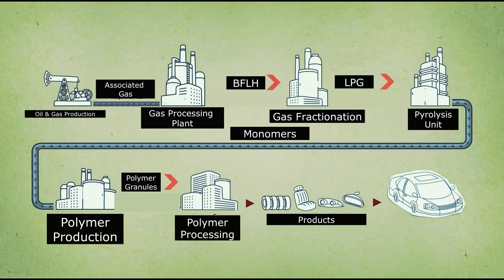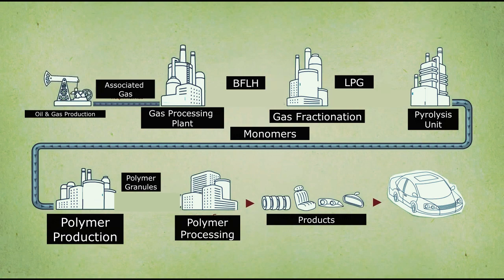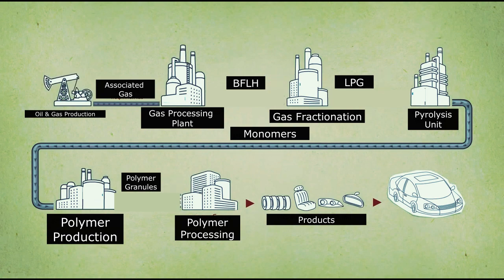A significant part of our material environment — from clothes to car components — consists of products derived from two natural sources, namely oil and gas, or rather from the products of their processing.